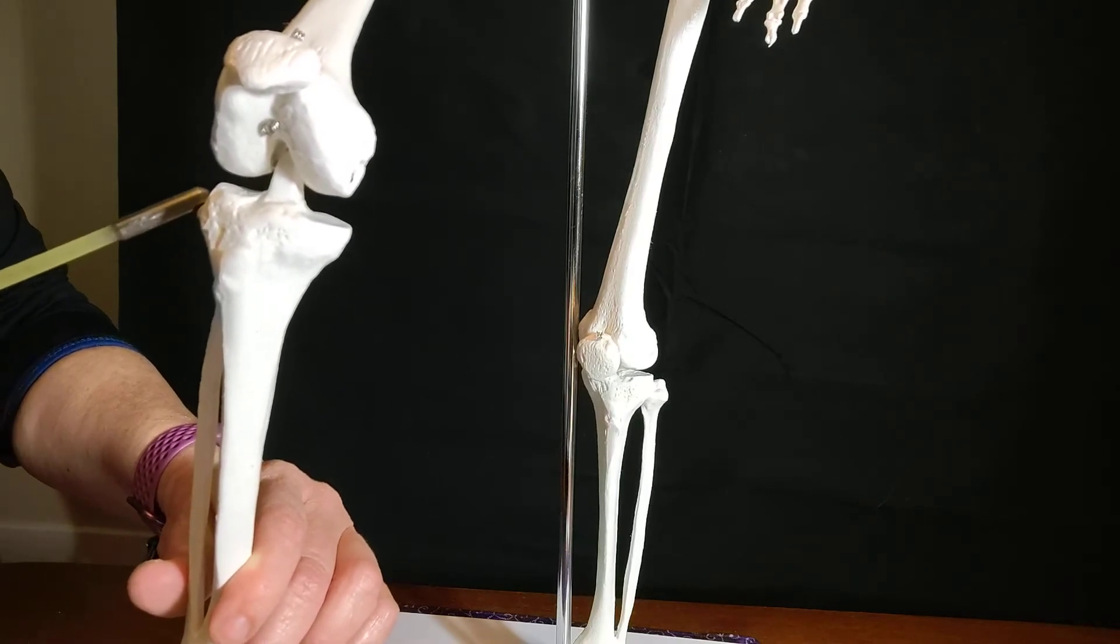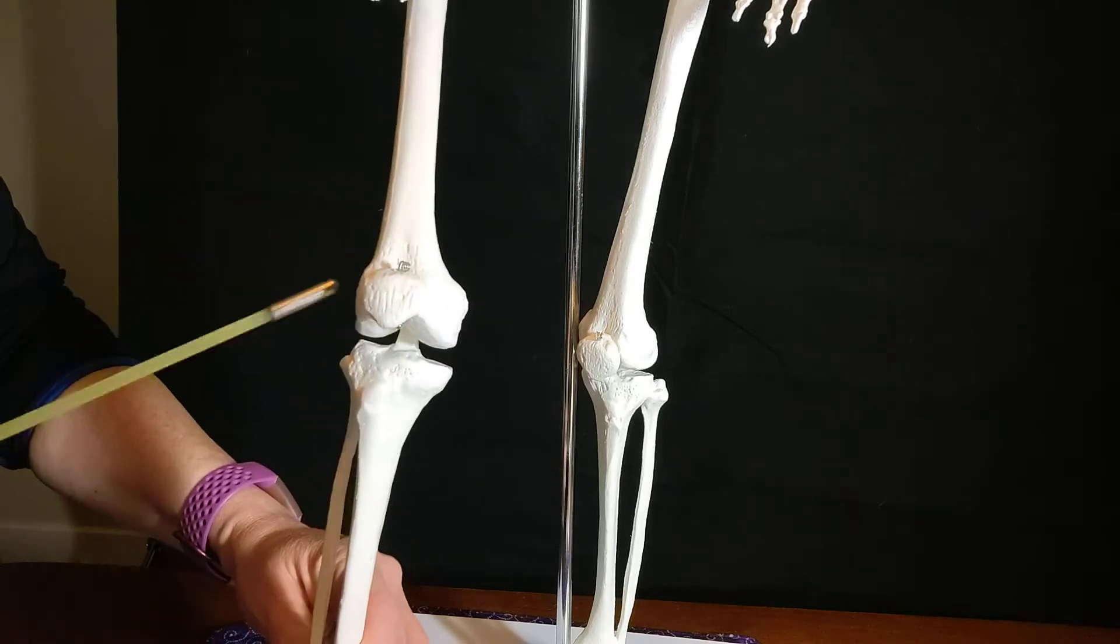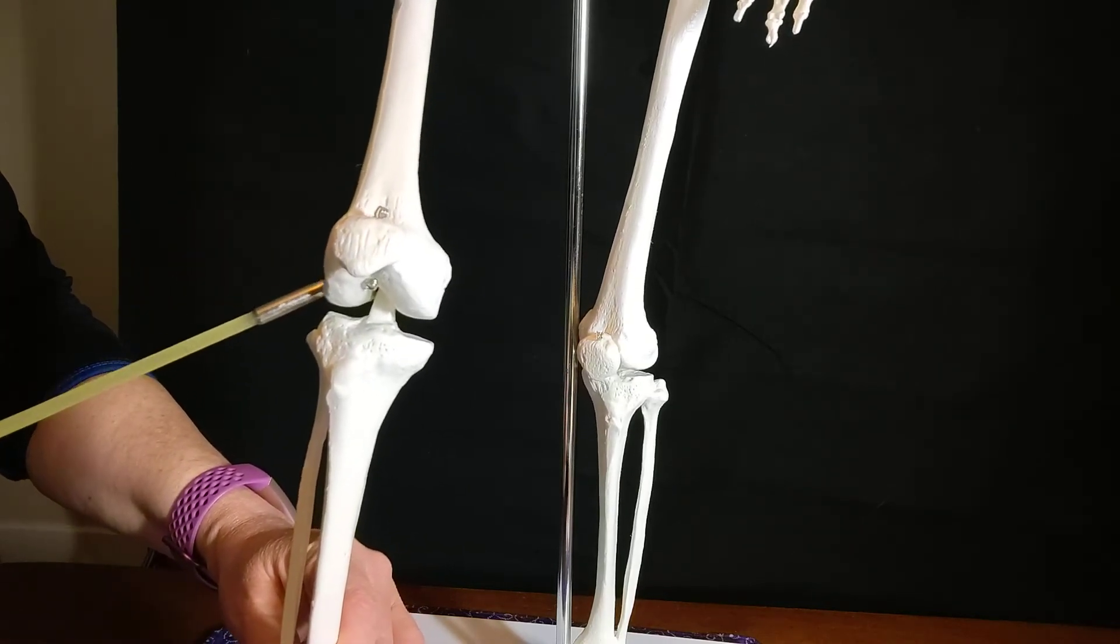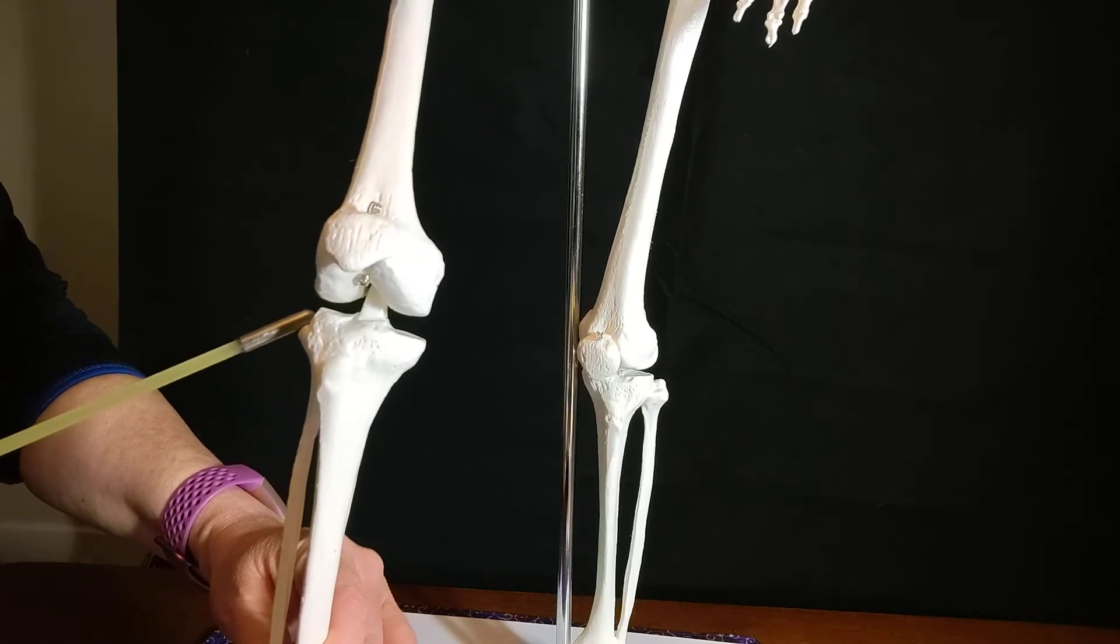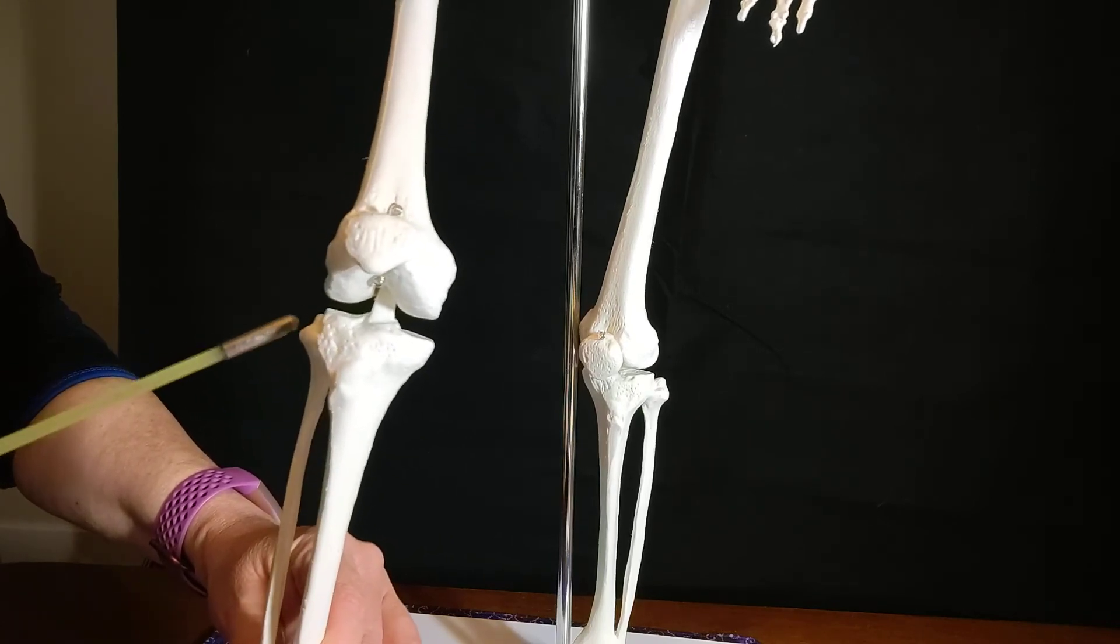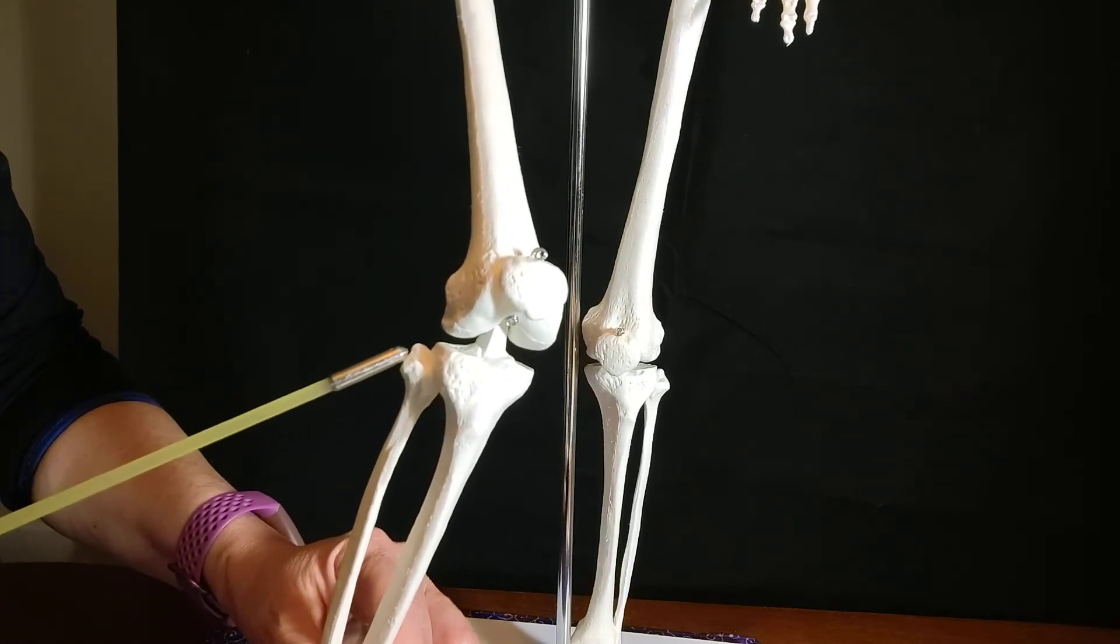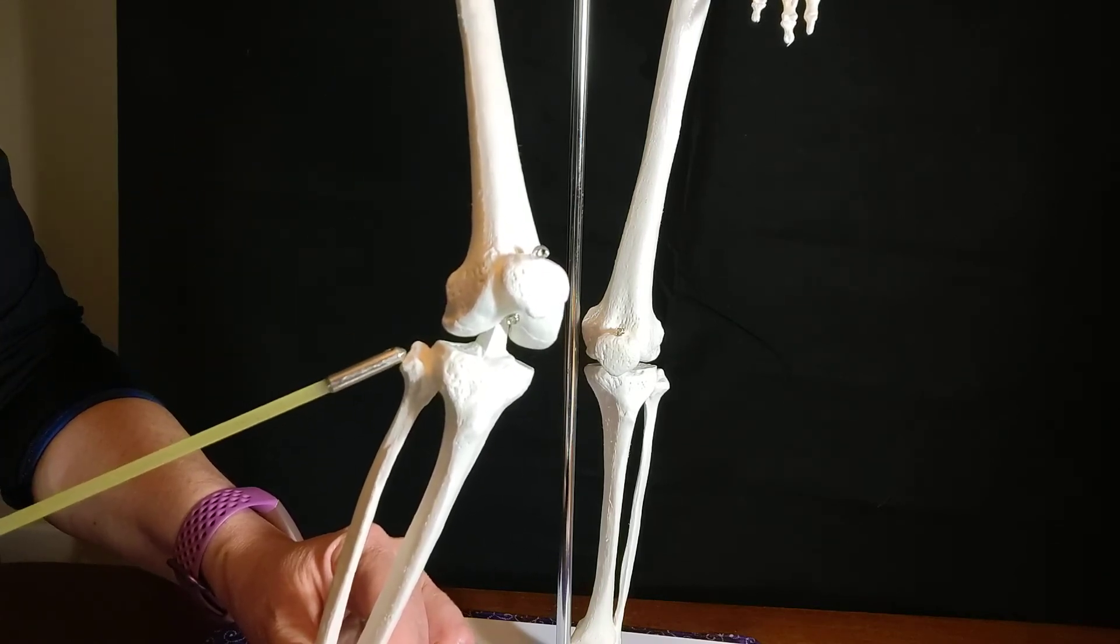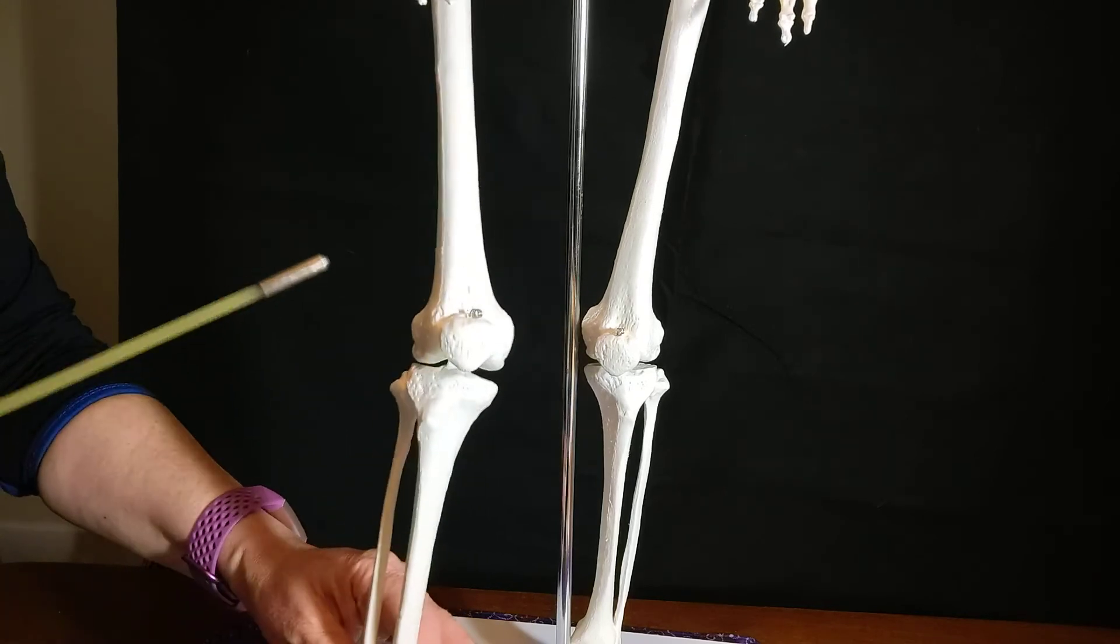The fibular head is on the lateral side of the tibia. If you start at the medial epicondyle of the tibia and go down to the joint line, and then just go inferior and posterior, you'll end up right on that fibular head. And that's an attachment for the iliotibial band and the biceps femoris. So that's a big attachment point.